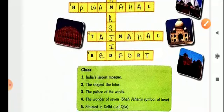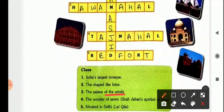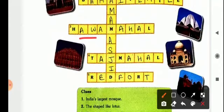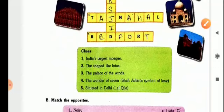Next, the place of the wind, it is Hawa Mahal. So H is already written, A, W, A you have to write. Again M is already written, and you have to write A, H, A and L is already written.